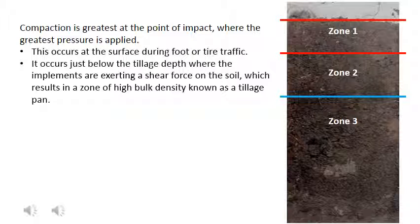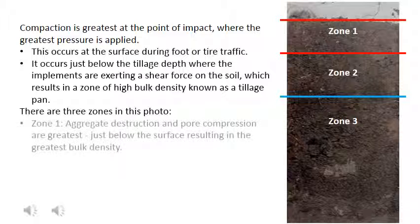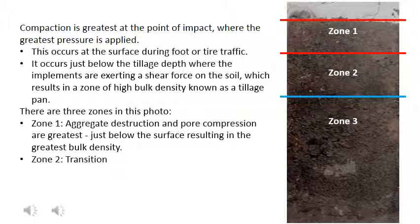Pressure was applied to the soil surface, resulting in three zones in this photo. In the first zone, aggregate destruction and pore compression are greatest just below the surface, resulting in the greatest bulk density. There are almost no visible aggregates or pores. In the transition zone, the soil is grading from the compacted condition near the surface to the undisturbed condition beyond the reach of the effects of the pressure applied at the soil surface.